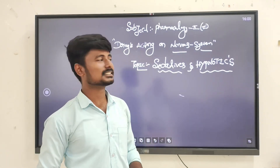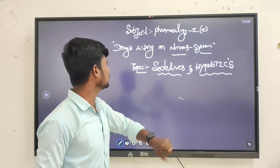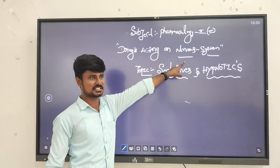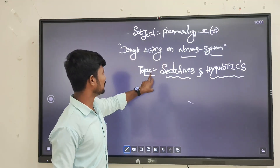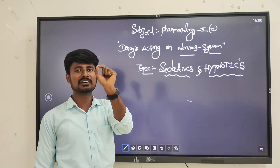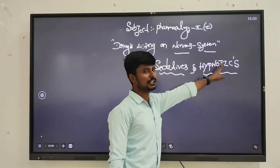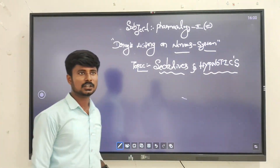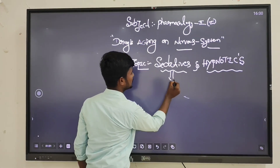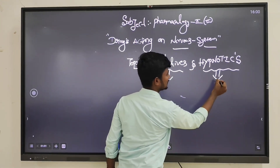Today we have to discuss pharmacology - drugs which are active on the nervous system. The main topic that is very important is sedatives and hypnotics. First, what do you mean by sedatives and what do you mean by hypnotics?